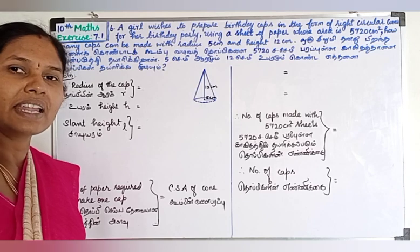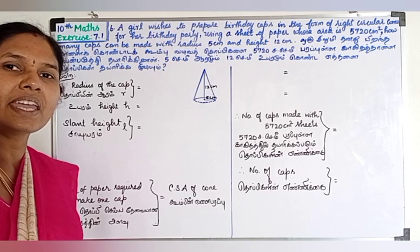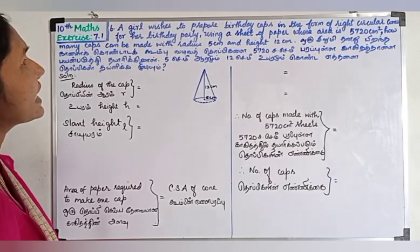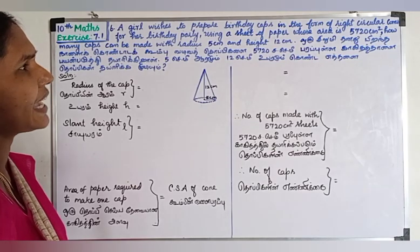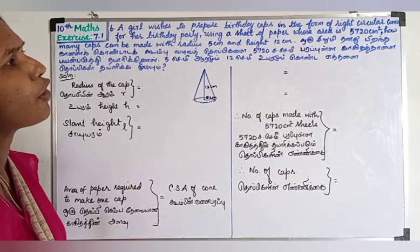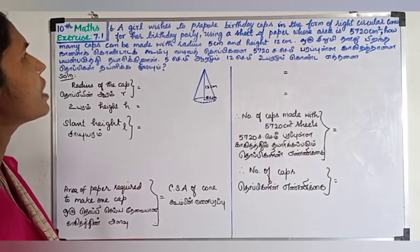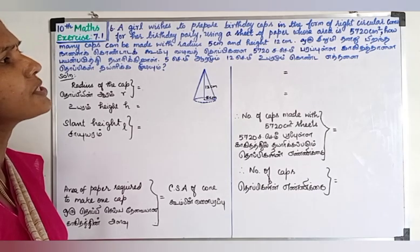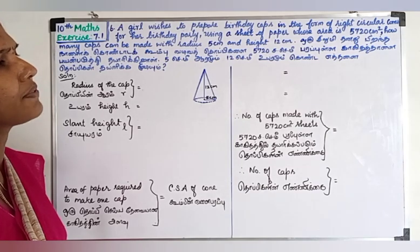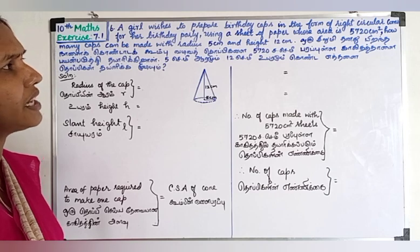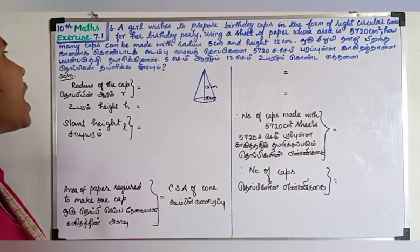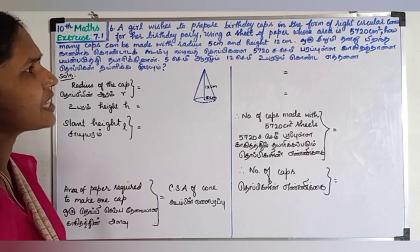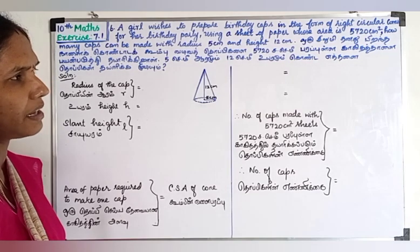Vanakam children, this is Manati. Now I am going to do Exercise 7.1. It is the sum based on cones. A girl wishes to prepare birthday caps in the form of right circular cones for her birthday party using a sheet of paper whose area is 5720 cm². How many caps can she make with radius 5 cm and height 15 cm?